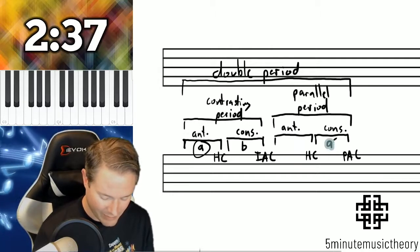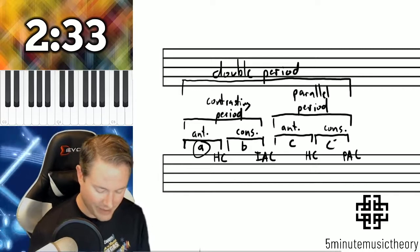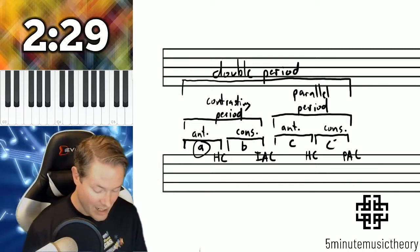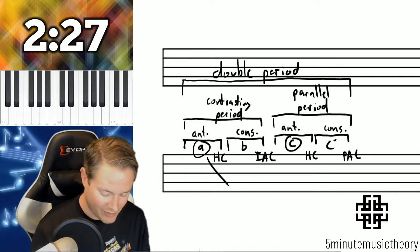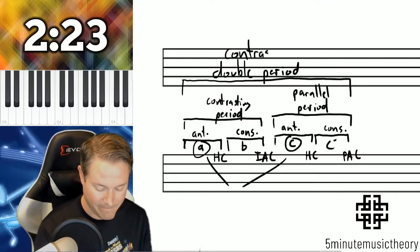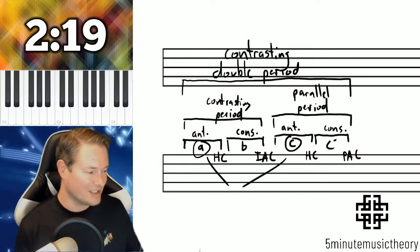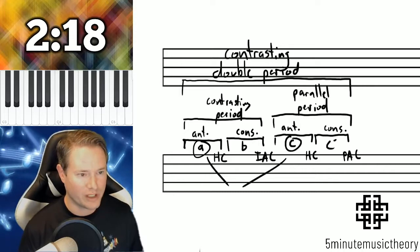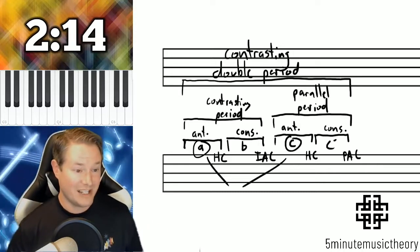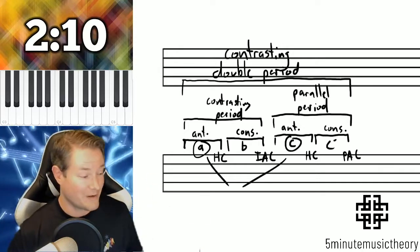Now I'm going to switch up the phrases a little bit and look at the other type. I'm going to get rid of that A and this A, and we're going to go C, C prime like this. I'll keep that parallel period in the second period there, but now the relationship between A and C is different. So this is a contrasting double period. What makes it contrasting is that the first period and the second period start with different material.